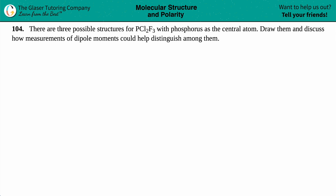Problem 104: there are three possible structures for PCl2F3 with phosphorus as the central atom — draw them and discuss how measurements of dipole moments could help distinguish among them. We have three different possible structures, and for this compound we have phosphorus, chlorine, and fluorine, all nonmetals, so the possible structures we need to draw are Lewis structures.